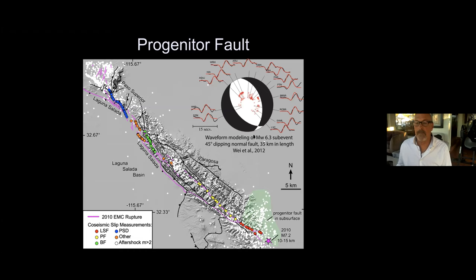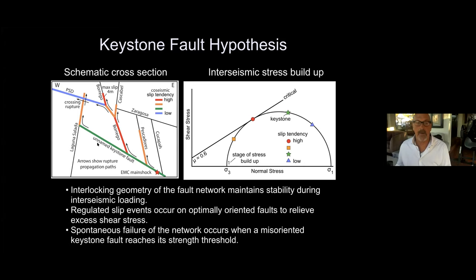This gives rise to the main problem with explaining multi-fault ruptures: it requires mechanisms for both maintaining fault stability at high slip tendency and for destabilizing faults with low slip tendency. Waveform modeling of the first 15 seconds of the earthquake shows that it initiated on a gently dipping normal fault in the subsurface. Due to its gentle to moderate dips, this fault must project underneath the Sierra Cucapah, and at magnitude 6.3 it extends approximately 35 kilometers, placing it almost at the northern end of the Sierra. So all the surface faults that ruptured in the event are underpinned by this moderately dipping normal fault.